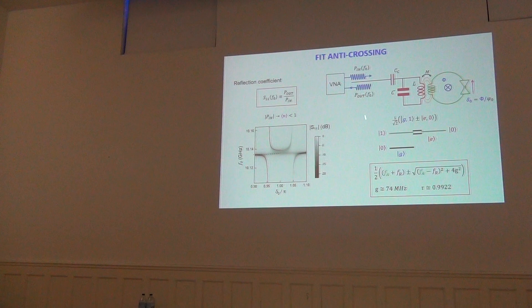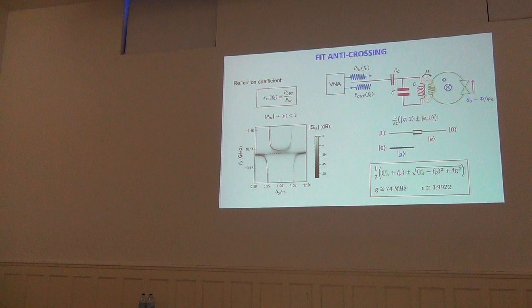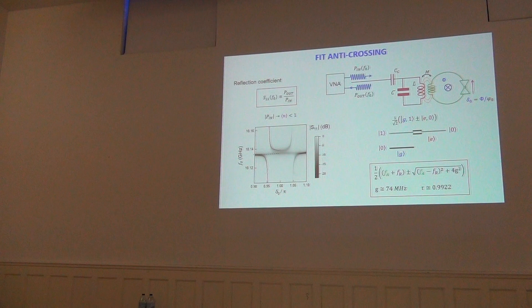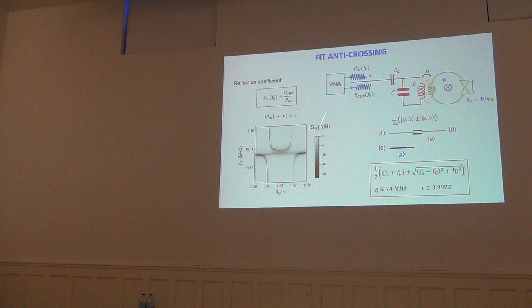For this measurement we must use very few photons — between zero and one — because the anti-crossing measurement is sensitive to photon number. With high drive power, higher ladder levels get populated and the simple picture breaks down; the anti-crossing washes out with contributions from many states.